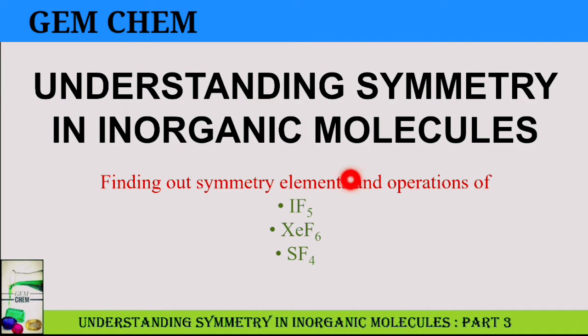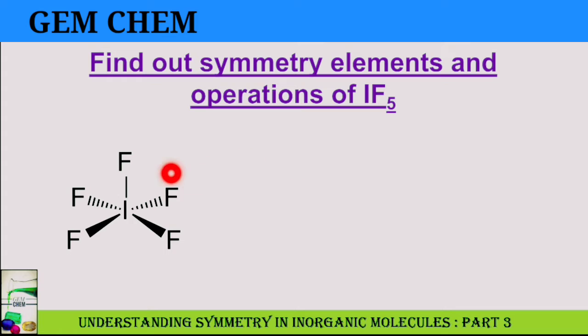So first molecule is IF5. Here we can see that it is appearing as a square pyramid shape. First of all, it will have the symmetry element E, so one operation for that.